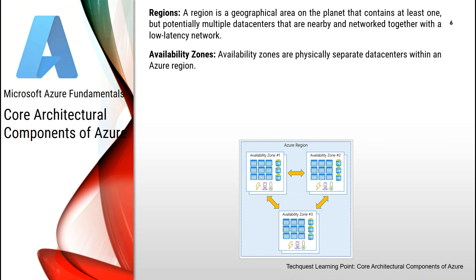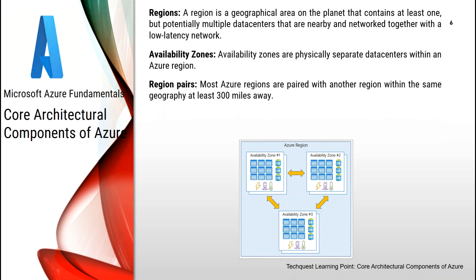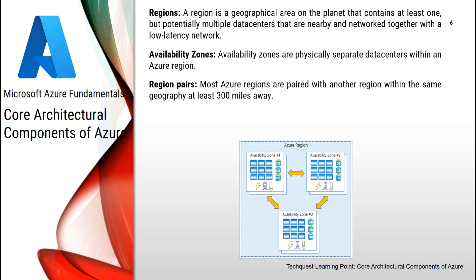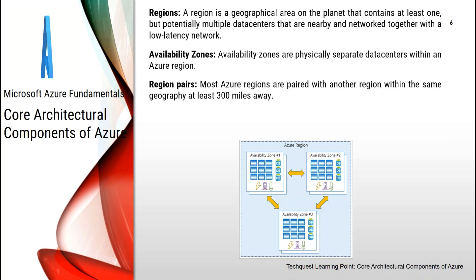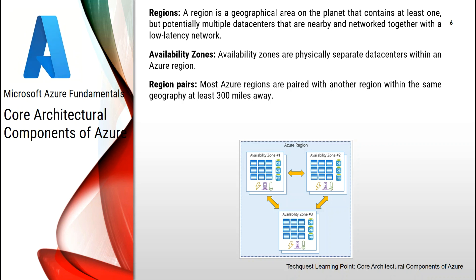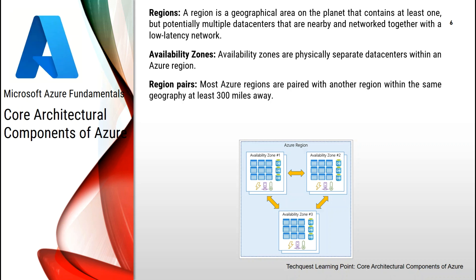Most Azure regions are paired with another region within the same geography — such as US, Europe, or Asia — at least 300 miles away. This approach allows for the replication of resources across a geography that helps reduce the likelihood of interruptions due to events such as natural disasters, civil unrest, power outages, or physical network outages that affect an entire region. For example, if a region in a pair was affected by a natural disaster, services would automatically fail over to the other region in each region pair.